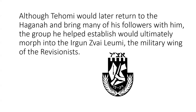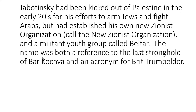The Irgun's logo shows a map of all what Jabotinsky believed was promised to the Jews — not just the land west of the Jordan River but east of it as well, which had become Transjordan. The Revisionists firmly believed the Zionist movement was entitled to all of that land. Superimposed over the map is a hand clutching a rifle, with the words 'Rak Kach' — 'Only Thus.' It harks back to the idea that only through militarism would they reclaim their land. Jabotinsky had been expelled from Eretz Israel in the early 1920s for his efforts to arm Jews and fight Arabs.